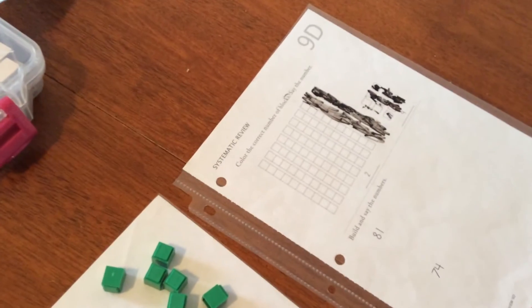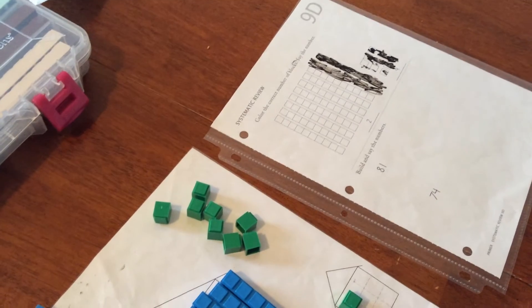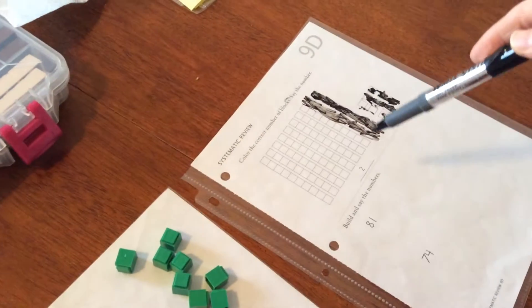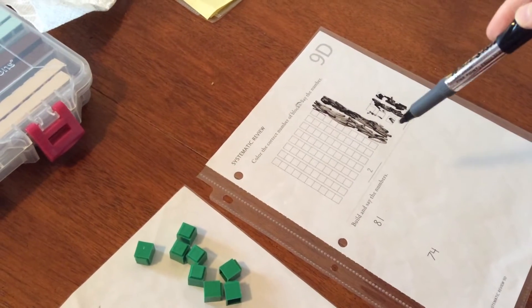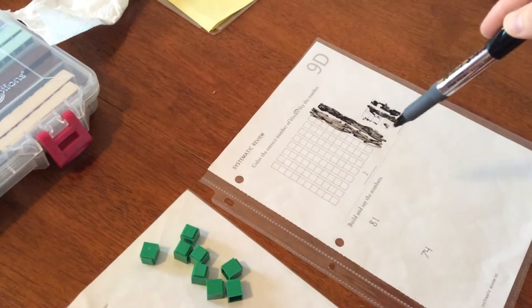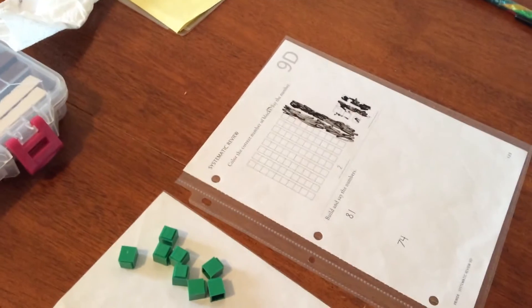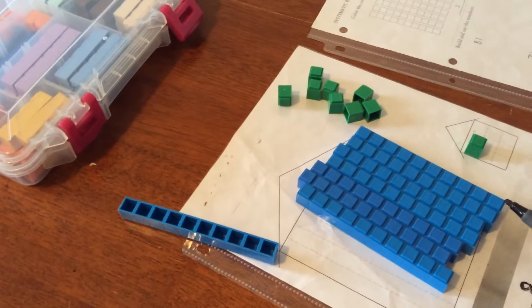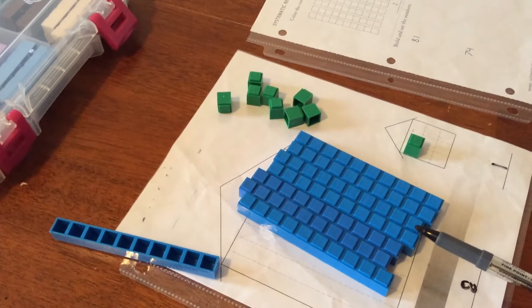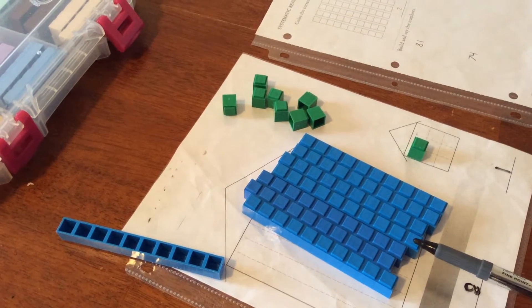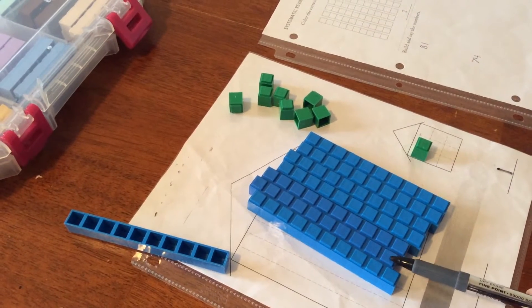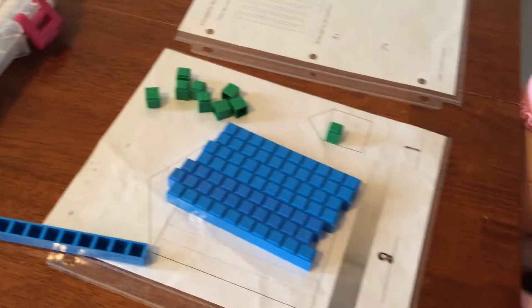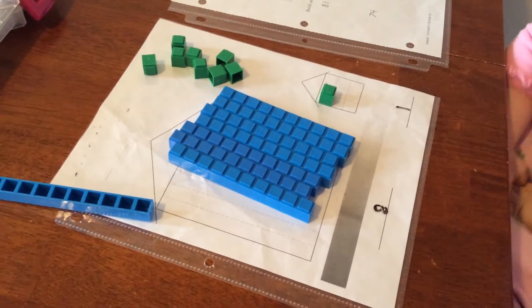Here's an example of Lesson 9. You see over here she had to color in. She erased some of it here. Is that 8? Count them. 1, 2, 3, 4, 5, 6, 7. So is it 8? No.